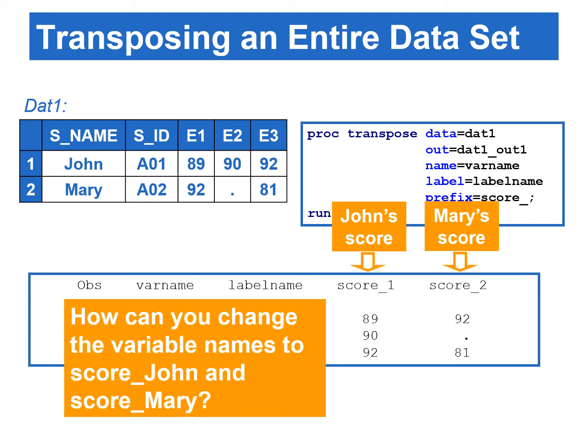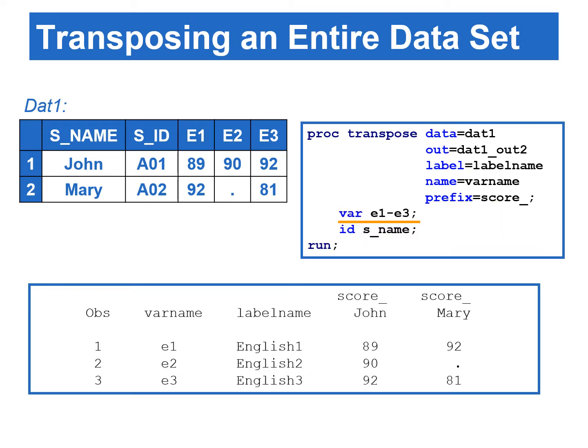In the transposed data set, SCORE_1 contains the scores for John, and SCORE_2 contains the scores for Mary. To change the variable names to SCORE_John and SCORE_Mary, we can use the ID statement to specify the variable from the input data set that contains the values to rename the transposed variables. By adding the ID statement with the S_name variable, the transposed variables are named SCORE_John and SCORE_Mary. Without specifying the PREFIX= option, the transposed variables would simply be John and Mary.